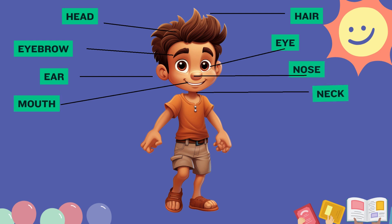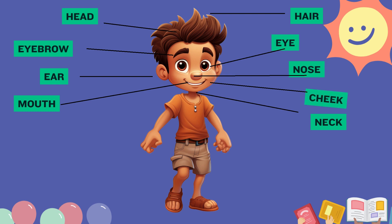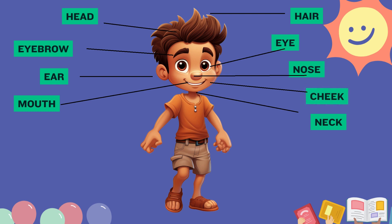Neck. The neck is the functional link between head and body. Cheek. They shape the human face and are considered a part of the digestive system as muscles within the cheeks participate in digestion.